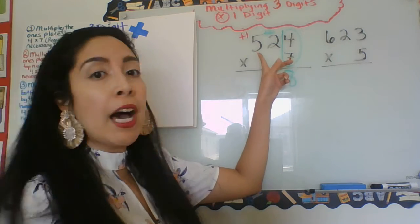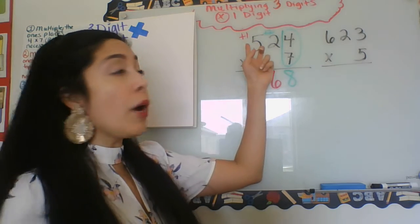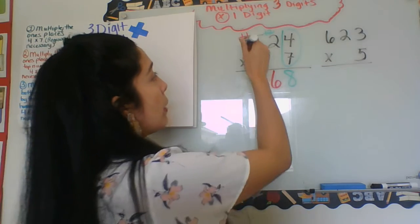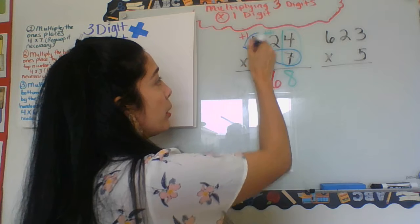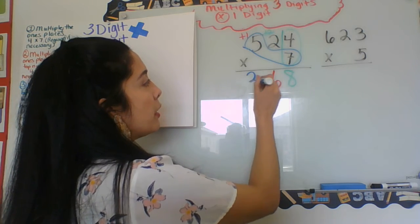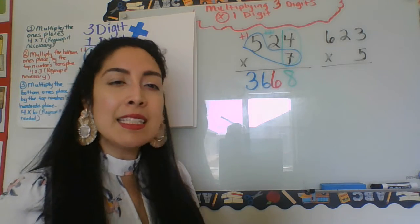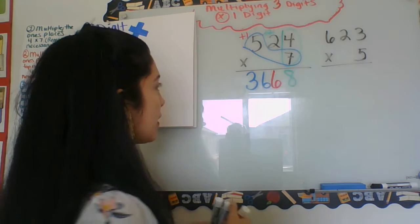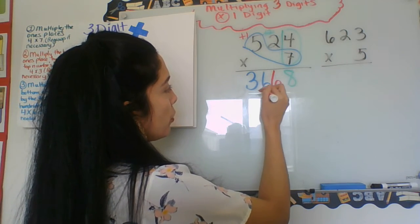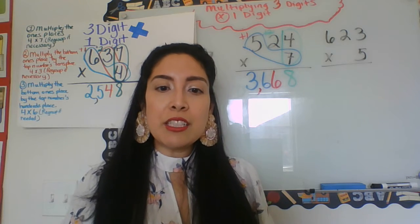We have seven times five is 35 plus one more is 36, and that is the number that I'm going to do last. So here we go, seven times five, 35 plus one is 36. So here my answer is 3668.